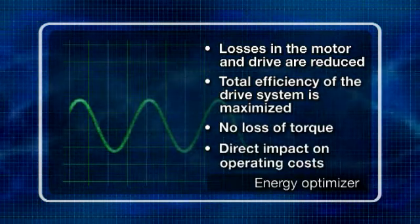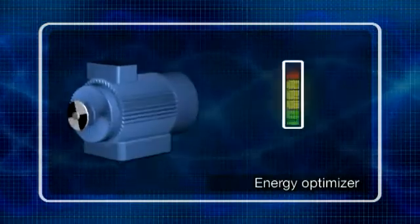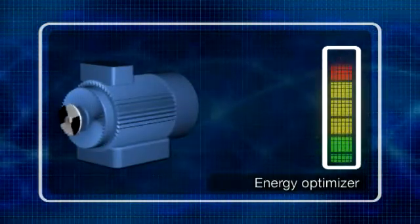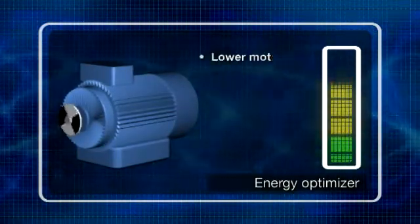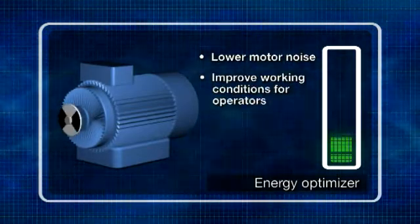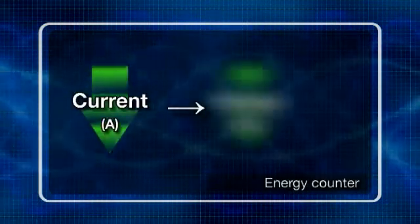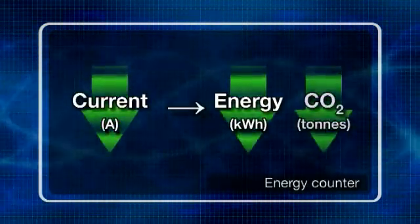Improved efficiency also has a direct impact on operating costs. Energy optimizing also results in a lower motor noise level, which benefits the operating and maintenance personnel working with the equipment. The inbuilt energy counter calculates energy savings in kilowatt hours and money-wise, and CO2 savings in tons.